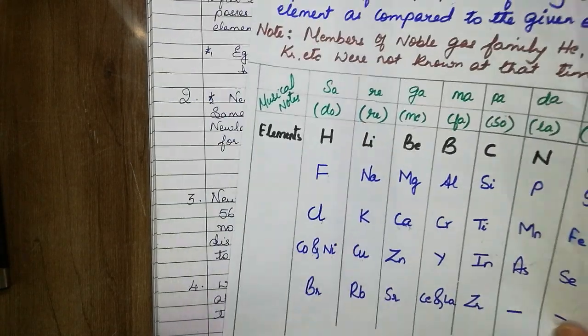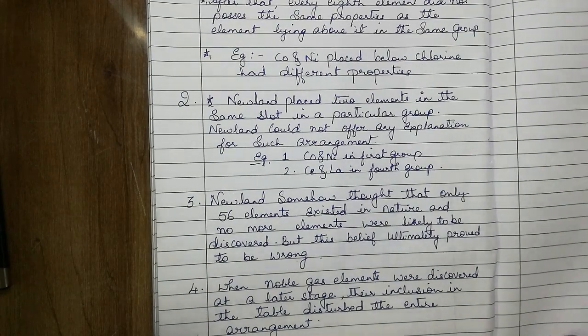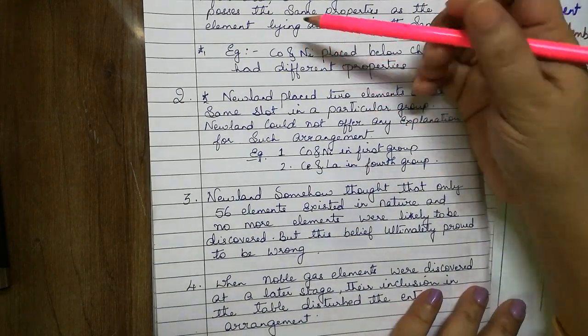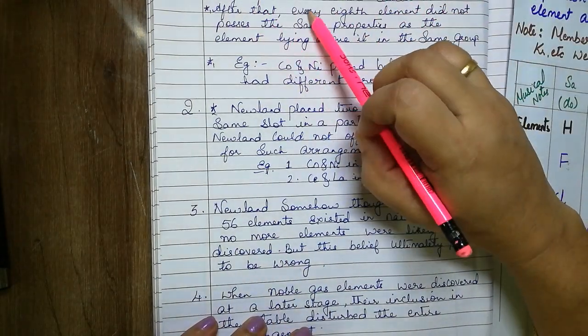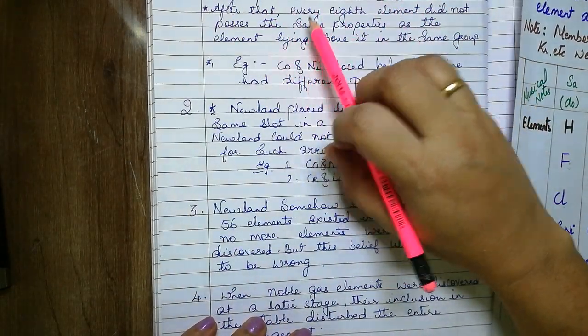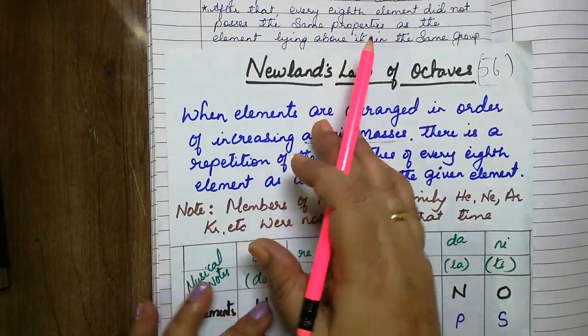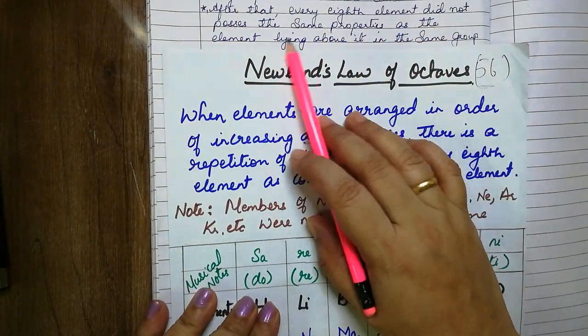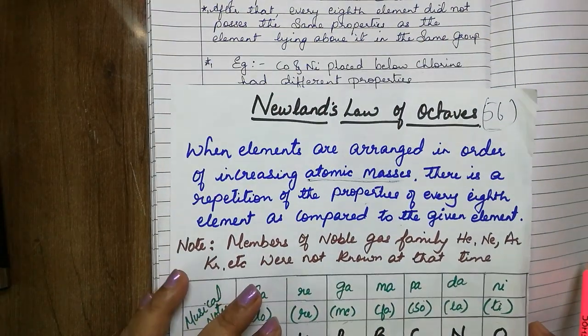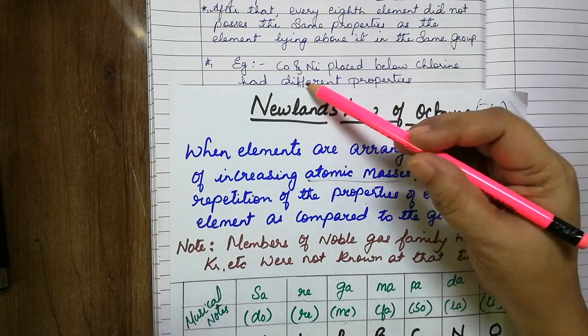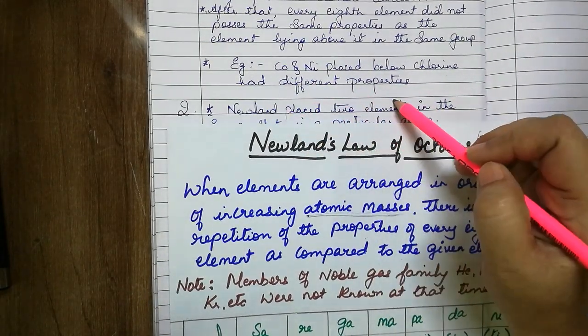Here I have listed the limitations. We will just go through it quickly. This classification was successful only up to the element calcium. After that, every eighth element did not possess the same property as the element lying about it in the same group. For example, cobalt and nickel placed below chlorine had different properties.